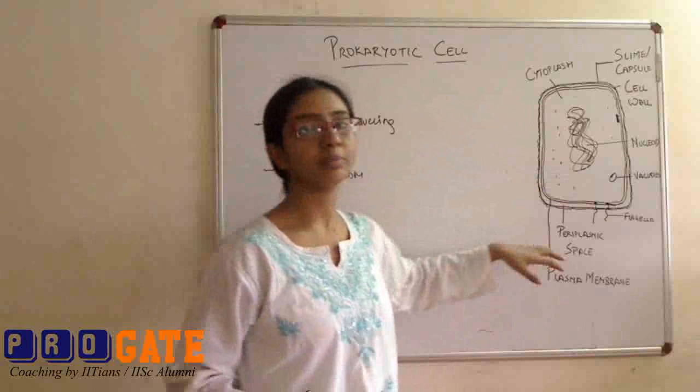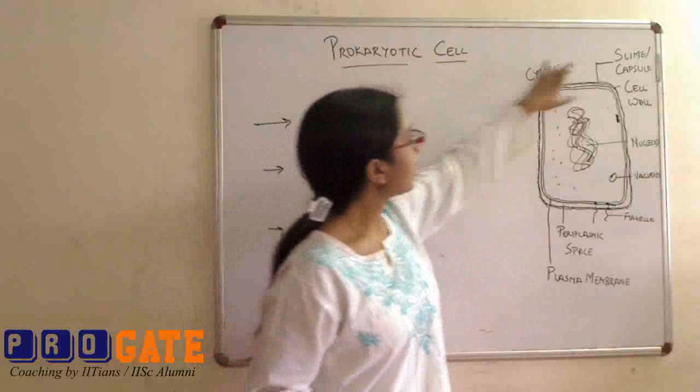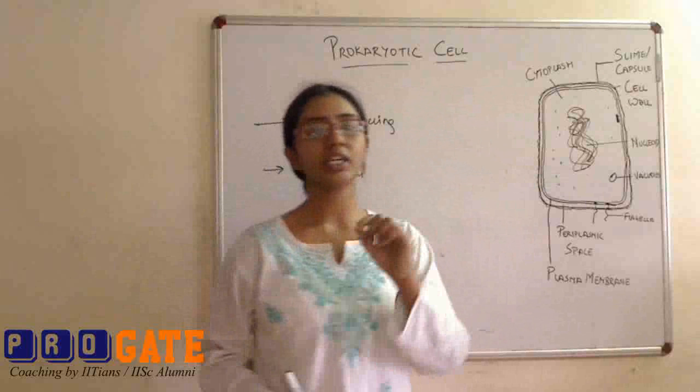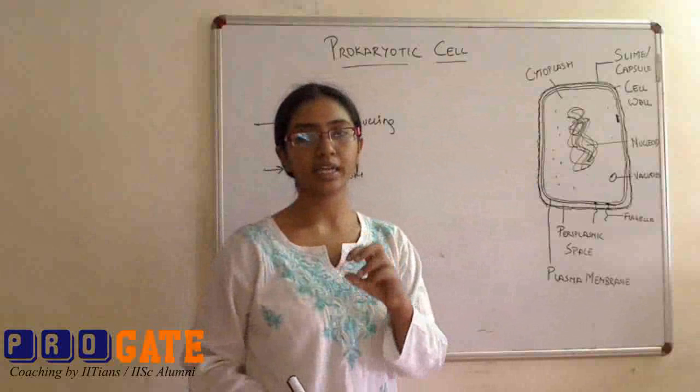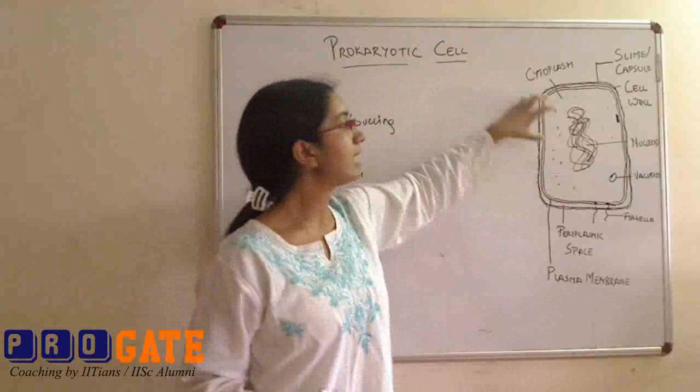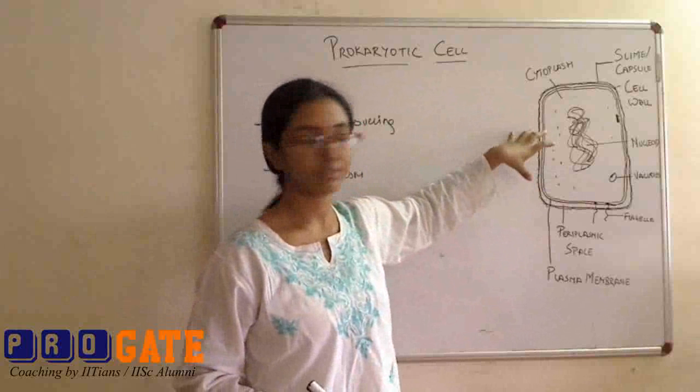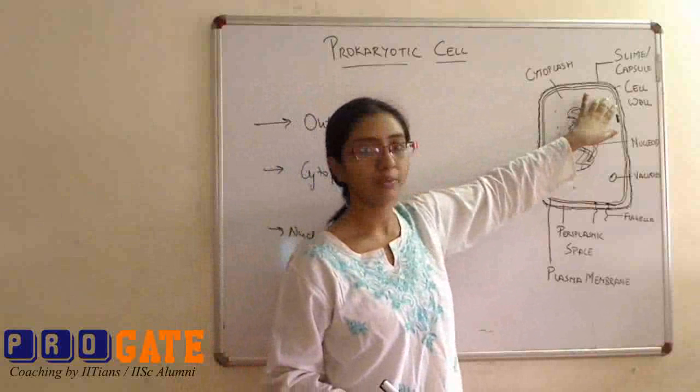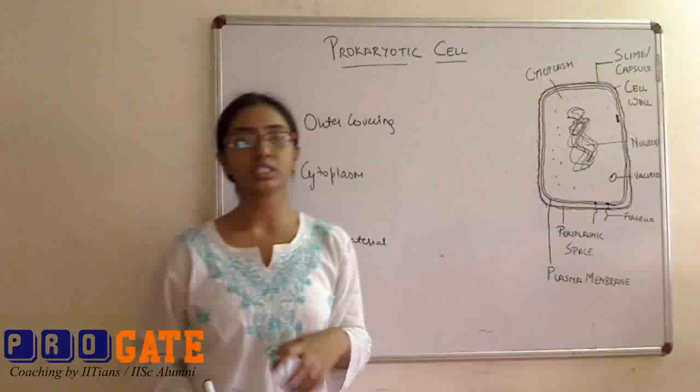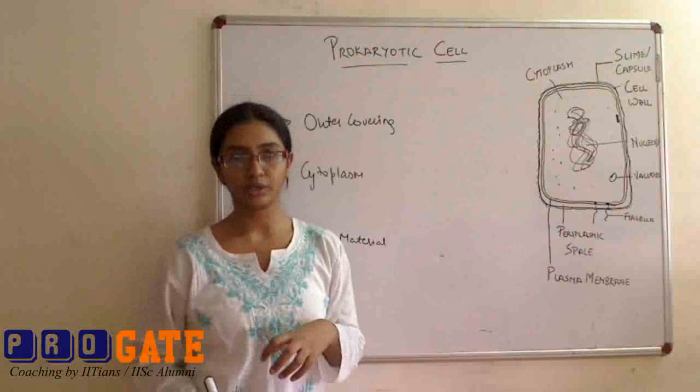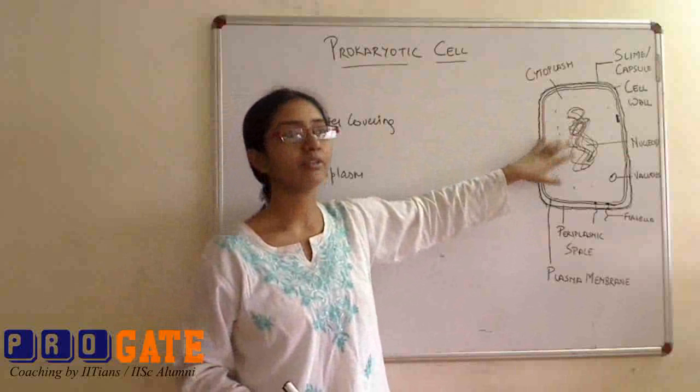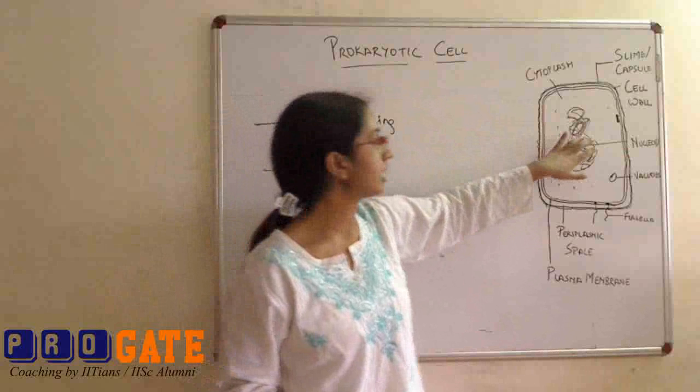We have a capsule at the outermost surface. This is basically a jelly material. That's why the prokaryotic cells are kind of a jelly material. This helps in attachment to surfaces. Inside the capsule, we have the cell wall, which provides basic protection. It also provides the shape and structure to the cell apart from providing protection.